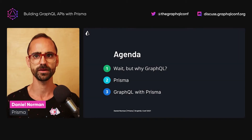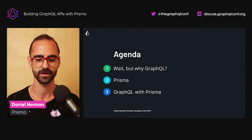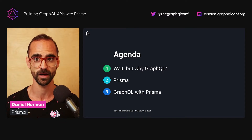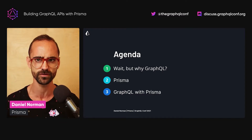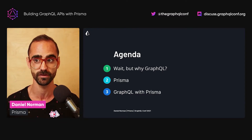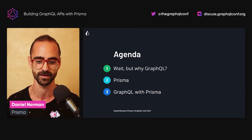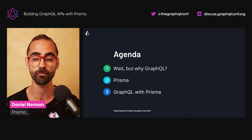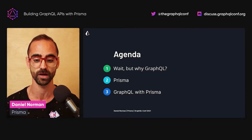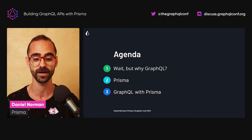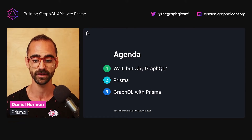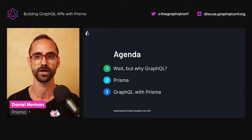Today's talk will be split into three parts. In the first part, I'll set context by recapping the reasons for using GraphQL in the first place. In the second part, we'll see how Prisma helps you work with your database and the type safety it provides. And finally, in the last part, you will learn how to build GraphQL APIs with Prisma.